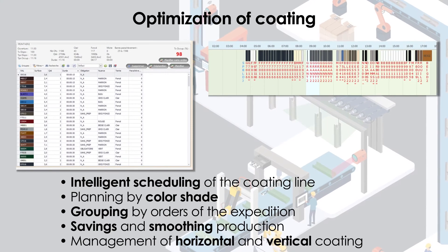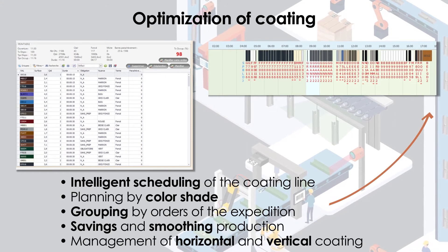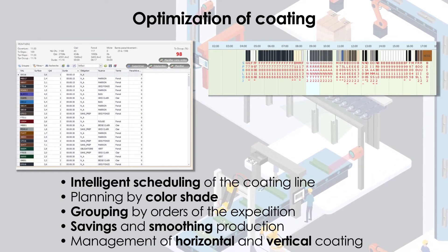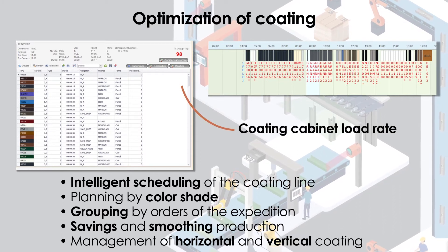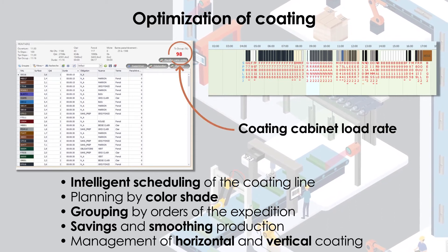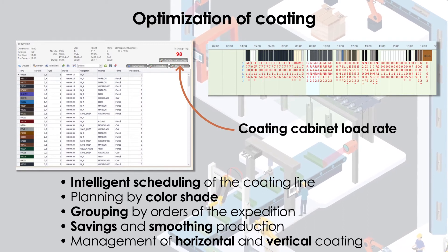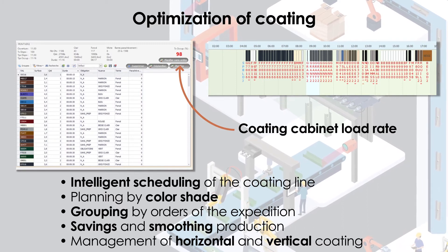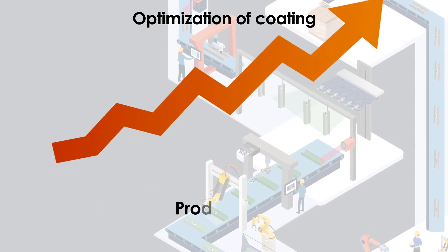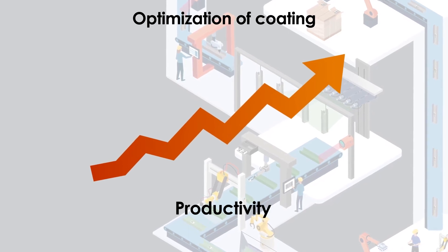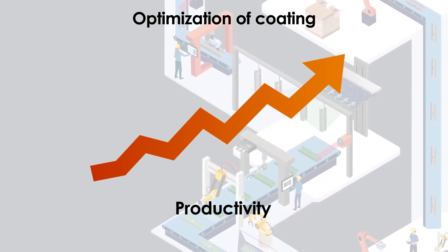KM Extrusion offers a scheduling module for the coating line by the color wheel. This makes it possible to group fabrication orders by color and thus save on cleaning time in the paint booths. In addition, the theoretical consumption of powders is optimized. Digitalization of the coating process helps to reduce the error rate and increase productivity.